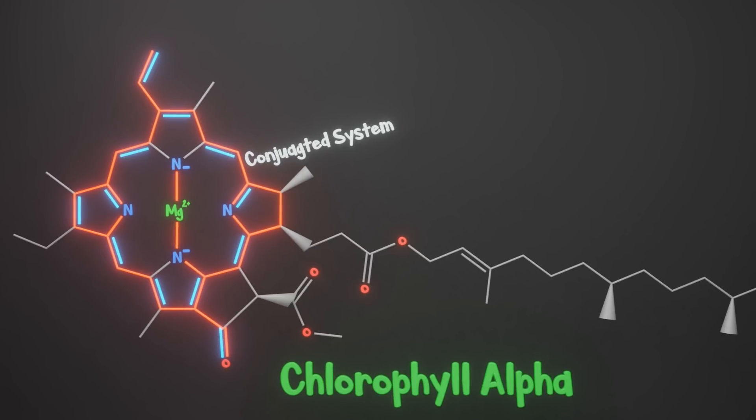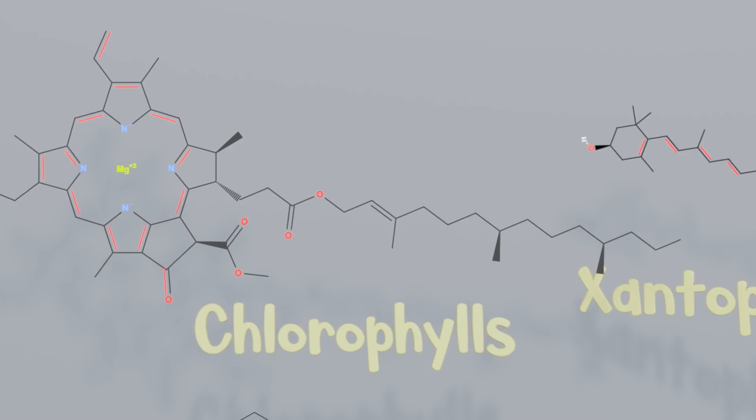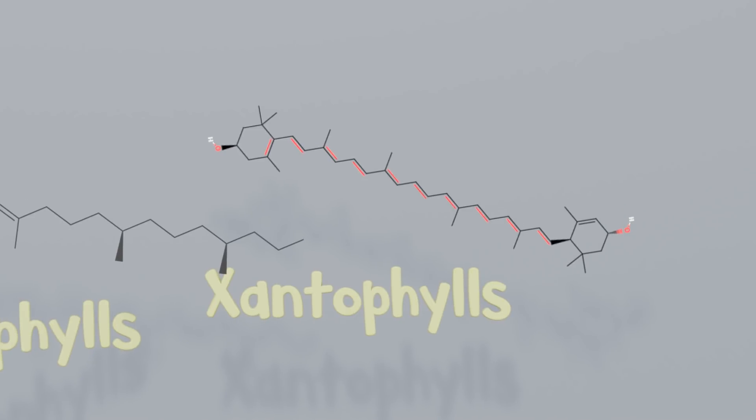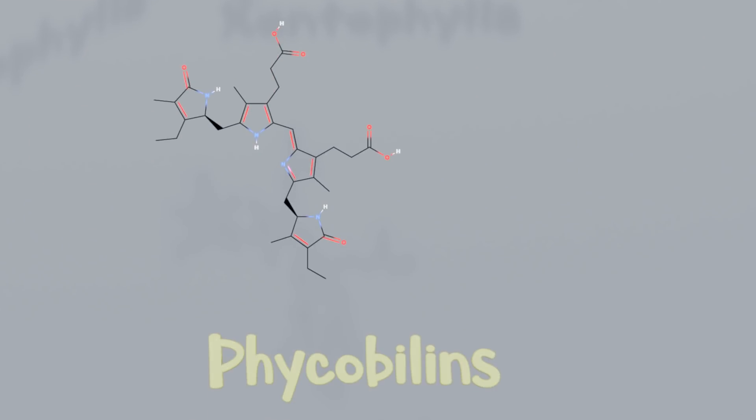This is what makes pigments special. They all have this property of a conjugated system, which allows them to absorb a wider spectrum of light.